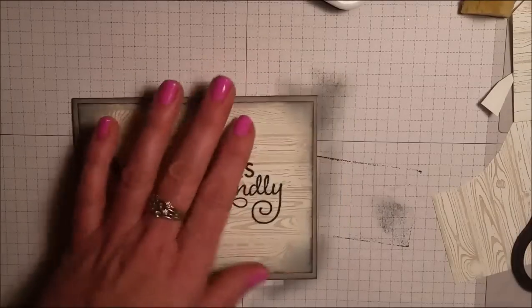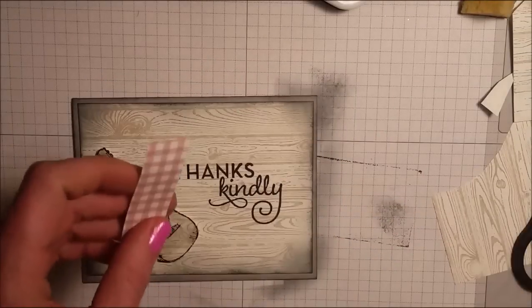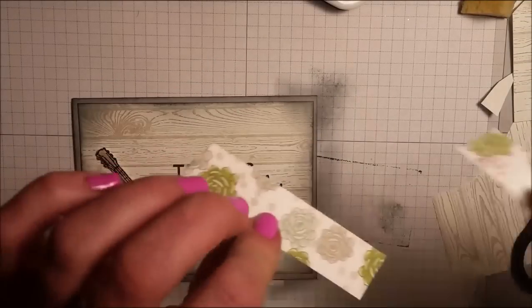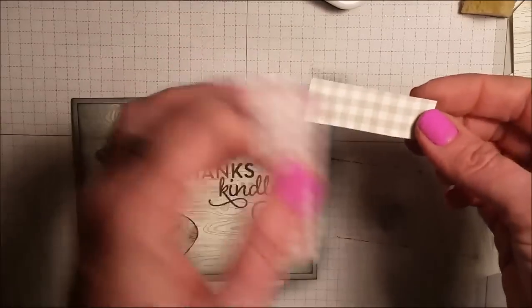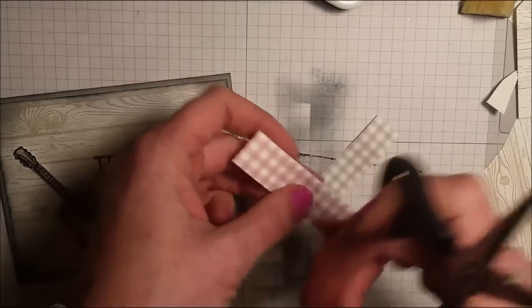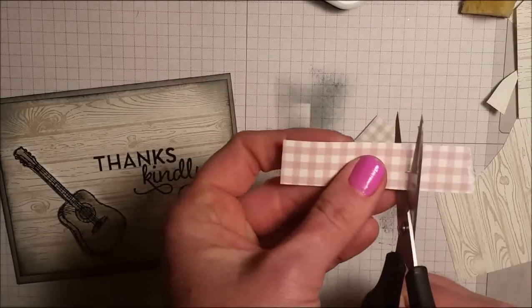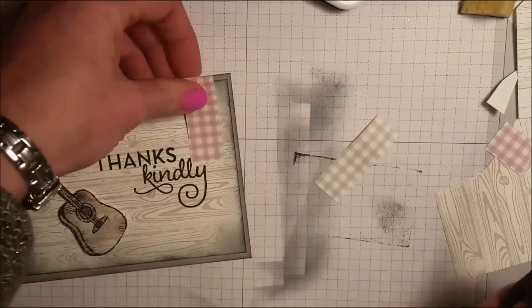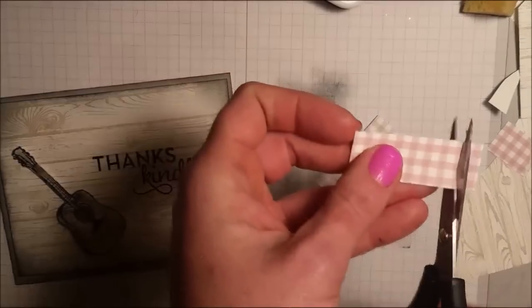So the next step is I want to make some little bandanas. So this is some scrap paper from the Succulent Garden Designer Series paper. And I like it because it's got that gingham pattern. So these are both about three quarters of an inch wide.